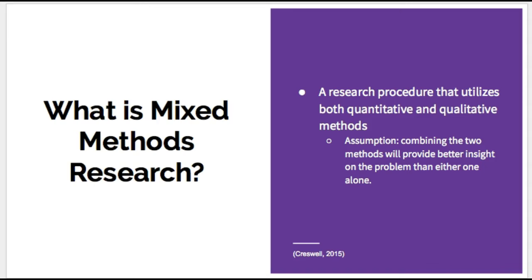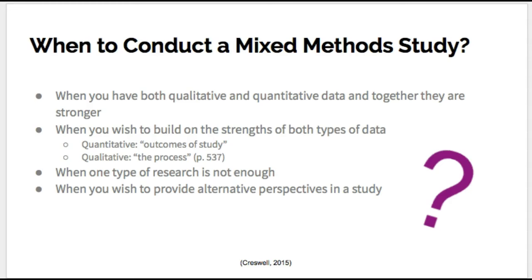Mixed method research is increasingly being published in scholarly literature. So when do you choose to conduct a mixed method study? When using qualitative and quantitative together produces stronger results than using them independently. You can also use them if you want to build on the strengths of both methods. Specific numbers show trends in quantitative data, and responses from real people provide qualitative research. Another way to look at it is utilizing the outcomes of the study, such as the quantitative data, alongside the process of the study, which is the qualitative data.